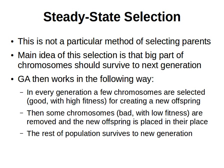So the idea works as follows: in every generation, a few chromosomes are selected — hopefully good ones with high fitness values — to create new offspring. Then some bad chromosomes, the ones with lower fitness values, are removed. The new offspring are placed in their place, replacing the removed ones. The rest of the population survives to the new generation.